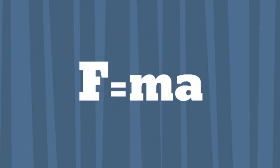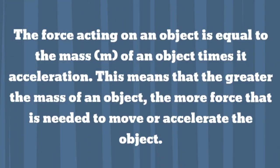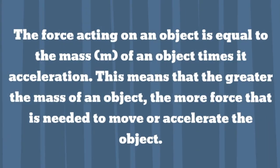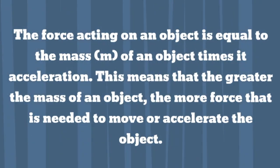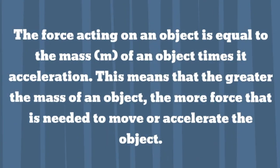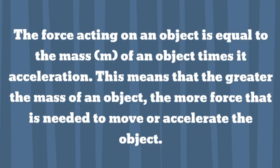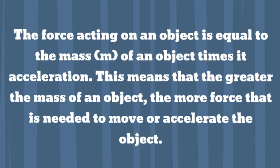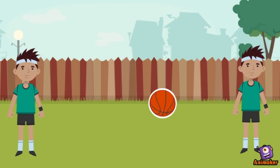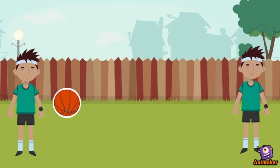Newton's second law of motion, also known as F equals ma, means that the force acting on an object is equal to the mass of the object times its acceleration. This means that the greater the mass of an object, the more force that is needed to move or accelerate the object. This law is seen whenever a basketball is passed or shot.